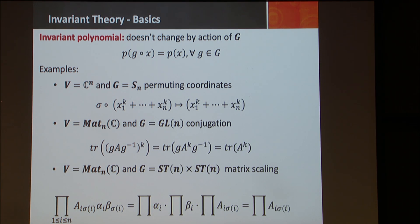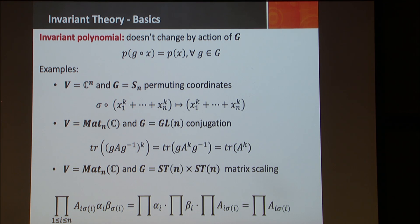Audience question: In the last example, the polynomial gets entries in B and gives out entries in B? Response: The output is just a complex number. Your input is an element of your vector space, and your output is a number — it's a polynomial on the entries of the vector. In the second example, the vector space is n-squared dimensional.